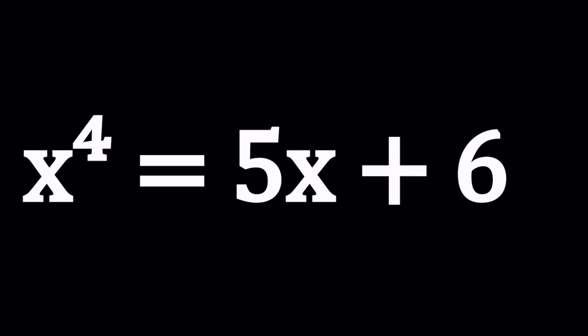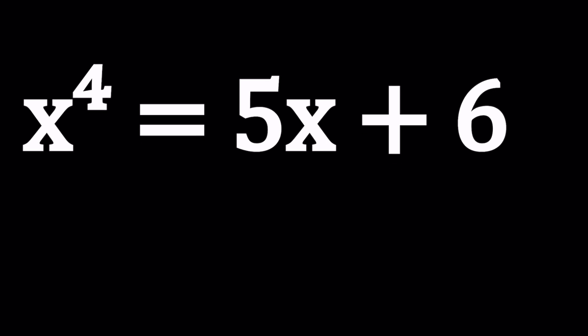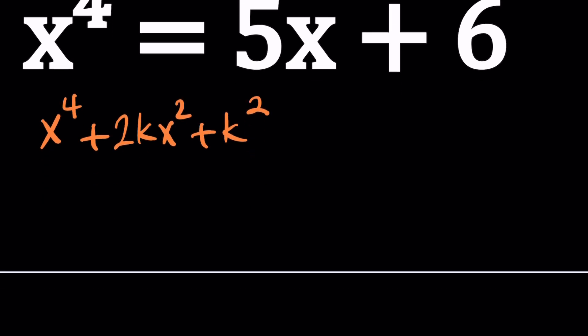So here's what we're going to do. We have the x to the fourth isolated. And if we didn't, then we would isolate it. You can have some other terms but it's better to keep it isolated like this. And then I'm going to add something to both sides so that I can make the left hand side a perfect square. And that can be achieved because this is fourth power. I can add 2kx squared plus k squared.